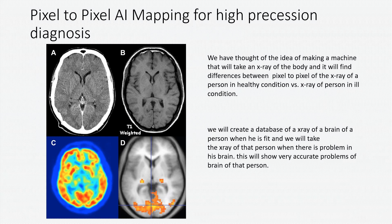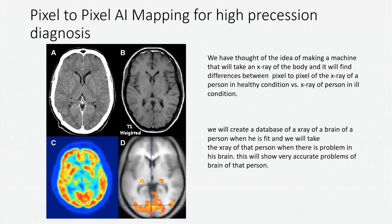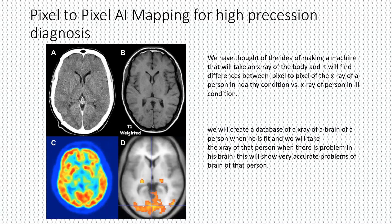So we have thought of an idea of making a machine that will take an X-ray of the body and find differences pixel to pixel between an X-ray of a person in a healthy condition versus an X-ray of a person in ill condition. We will create a database of X-rays of a brain of a person when he is fit, and we will take the X-ray of that person when there is a problem in his brain.